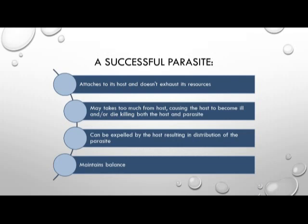For a parasite to be successful, it needs to be able to attach to its host and not exhaust too many resources too quickly. If it does, it won't be able to reproduce and pass on infection to other hosts, which would end the line of infection. The goal is to balance resource consumption — enough to allow the parasite to disseminate into other hosts and be distributed back into its life cycle.